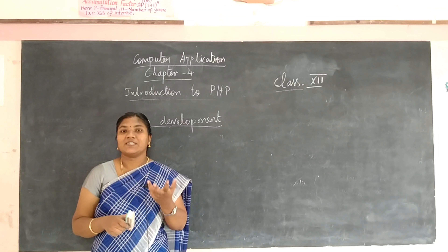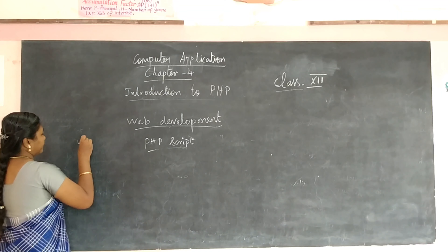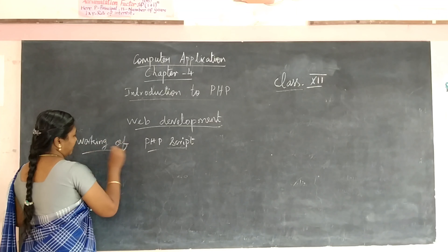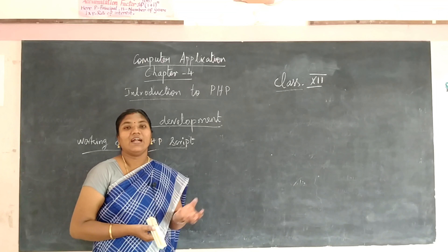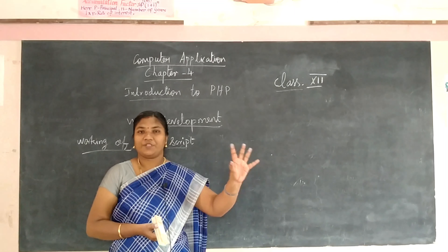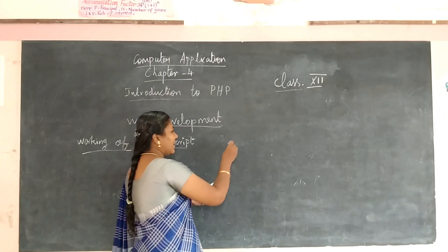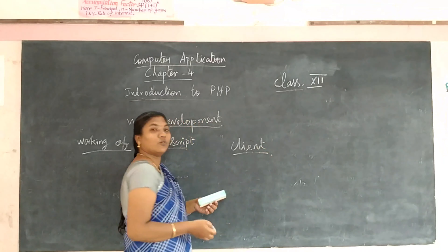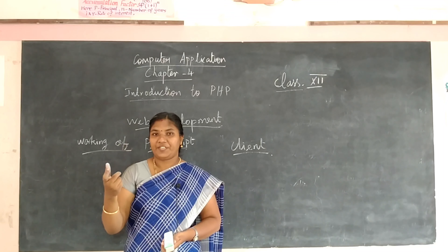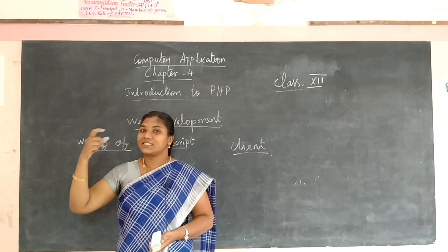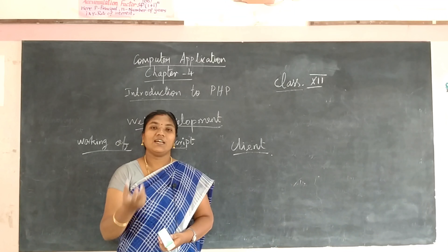Now we are going to see how the PHP script works. First, the PHP script is created by a programmer and it is kept on a remote server machine. Then the client — that is, the user — goes to their system, opens a web browser, and types a URL of a website or web page. That request is sent to the remote server. The web server then searches and interprets the PHP code and gives a response to the client machine.